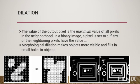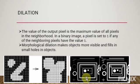Dilation: the value of the output pixel is the maximum value of all pixels in the neighborhood. In a binary image, a pixel is set to one if any of the neighboring pixels have the value one. Morphological dilation makes objects more visible and fills small holes in the object.